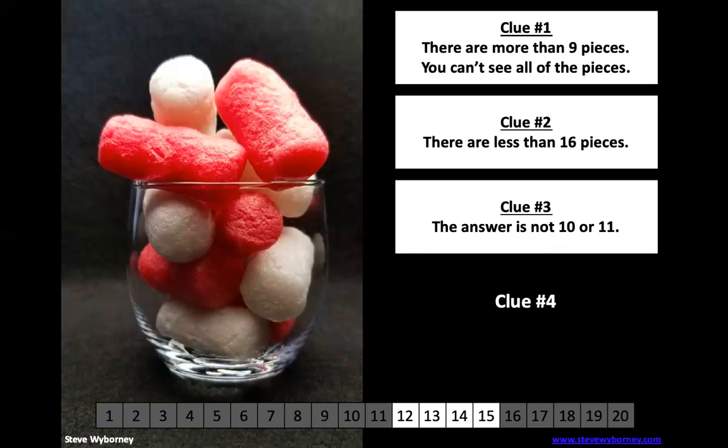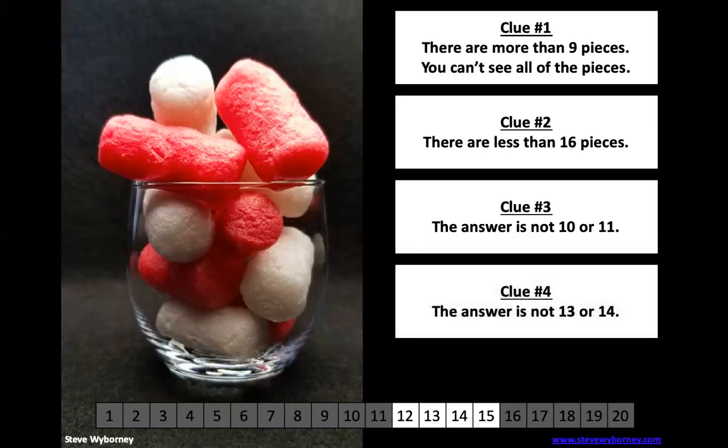All right, you ready for the final clue? The answer is not 13 or 14. So I look on my number track here. Here's 13 and here's 14. These numbers have a one in the tens place. And in this case, it's three in the ones place or a four in the ones place. So it's not 13 or 14. So I'm going to shade those ones too. That leaves me with two numbers. Did we cross out your number? If so, that's okay. You've got more information, fine tune your estimate.